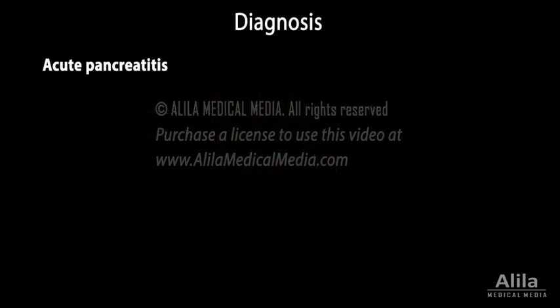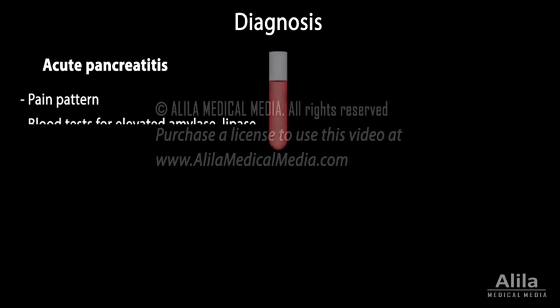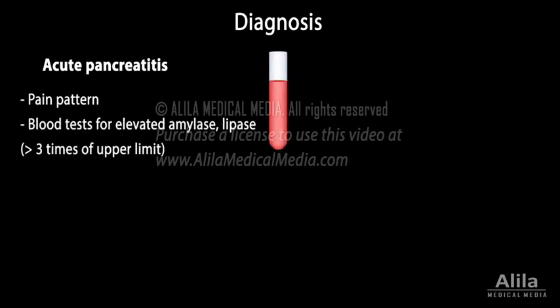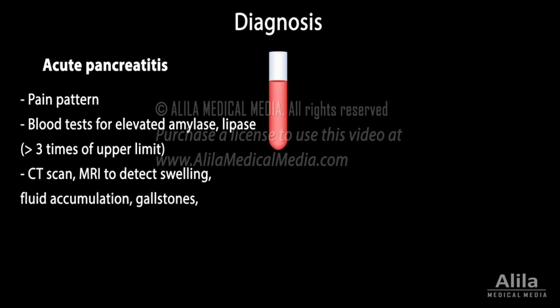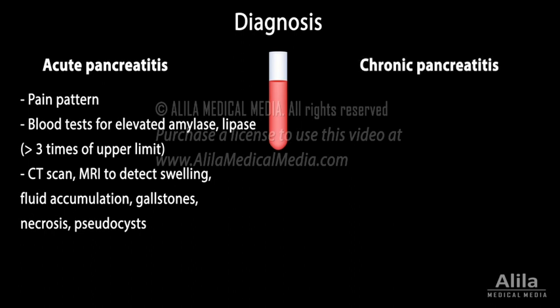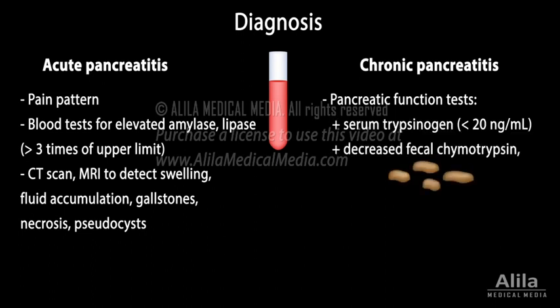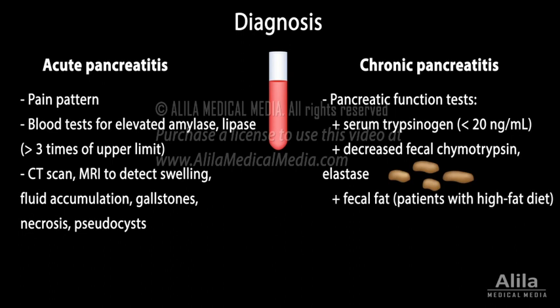Acute pancreatitis is diagnosed based on the pain pattern, blood tests for elevated pancreatic enzymes, and imaging studies to detect swelling, fluid accumulation, gallstones, necrosis, and pseudocysts. For chronic patients, pancreatic function tests are performed to measure serum trypsinogen, fecal chymotrypsin, elastase, and fecal fat in patients with a high-fat diet. Pancreatic calcification can be detected with x-ray of the abdomen.